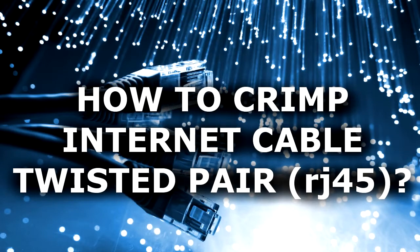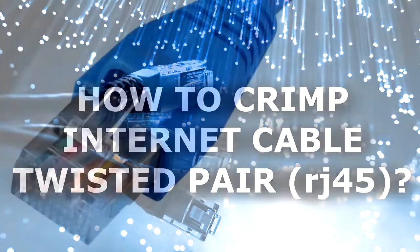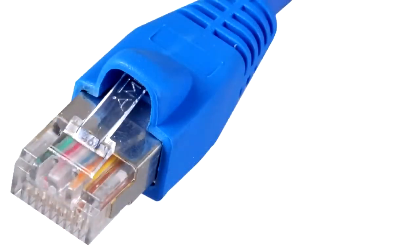Hi guys! In this video we'll see how to crimp RJ45 cable twisted pair. This type of cable is used for internet connection or making a local network.